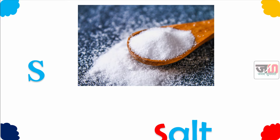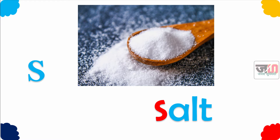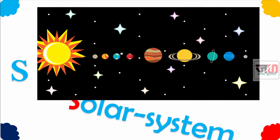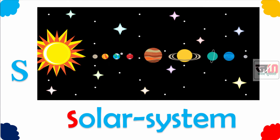S for Salt. Salt means mees, pratyek bhaji madhe vaapar to. S for Solar System. Solar system means surya malha, jamaadhe, aneak graha, aani upa graha astar.